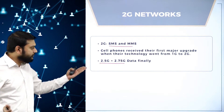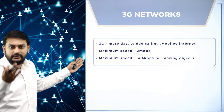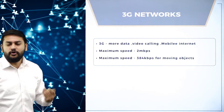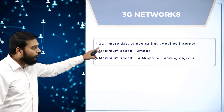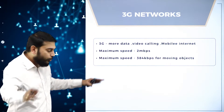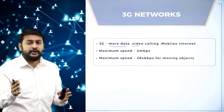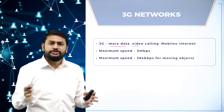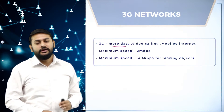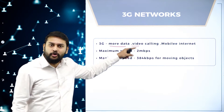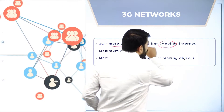So internet was introduced in the 2G generation with a minimum speed. Then how exactly did it evolve? We have the next generation — 3G. More data and video calling was enabled in 3G. We moved from using MBs to consuming GBs of data. Video calling and video conferencing also became possible in 3G, along with a lot of mobile internet usage.